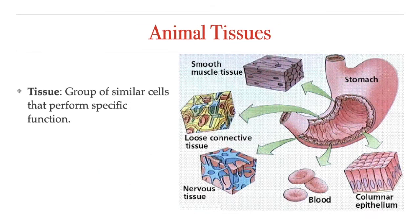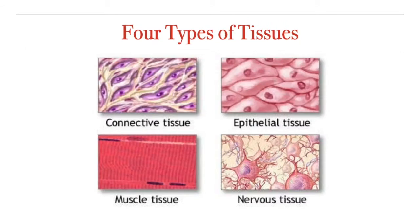Let's take a look at animal tissues — a group of cells that have similar structure and act together to perform a specific function. Humans and other large multicellular animals are made up of four basic tissue types: connective tissue, epithelial tissue, muscle tissue, and nervous tissue. Let's explore each of them one at a time.